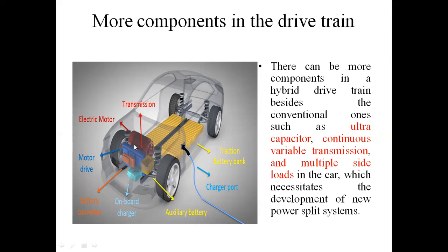In this diagram I will explain the components: Transmission, Electric Motor, Motor Drive, Battery Converter, Onboard Charger, Accessory Battery, Traction Battery Bank, Charger Point connected by wire, Wheels, and Spring. This is the Hybrid Vehicle Diagram. In this Hybrid Vehicle, there are many components, and this makes it very difficult to control — which is also one of the challenging issues.